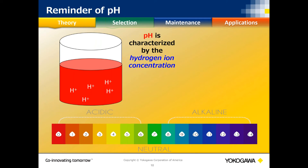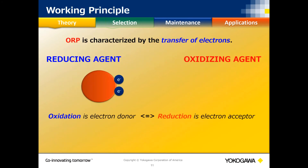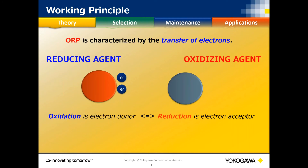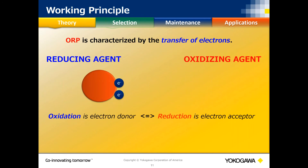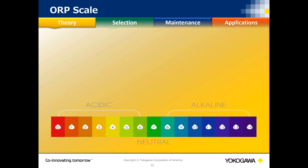ORP has a scale similar to pH. It normally goes from positive 1500 mV, corresponding to 0 pH, to negative 1500 mV at 14 pH, with 0 mV in the middle being neutral at 7 pH. Below 0 is oxidizing; above 0 is reducing. ORP is non-selective — like conductivity — we're just looking at everything in the solution causing oxidation reduction and generating a millivolt value.